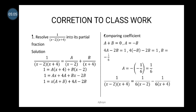Since b equals minus 1 over 6, and a equals minus b, then a equals minus(minus 1 over 6), which gives a equals 1 over 6. So a is 1 over 6 and b is minus 1 over 6.